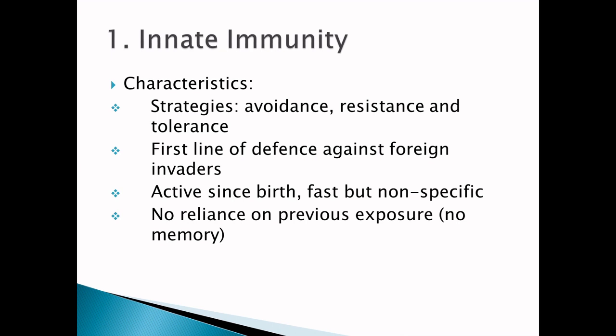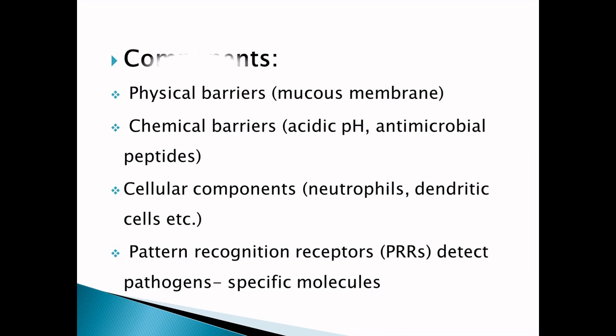Innate immunity does not respond according to the type of invader and does not rely on previous exposure to a pathogen — so it has no memory. The components of innate immunity include physical barriers, chemical barriers, cellular components, and pattern recognition receptors (PRRs), which help in the detection of the pathogen or any molecule associated with the pathogen.